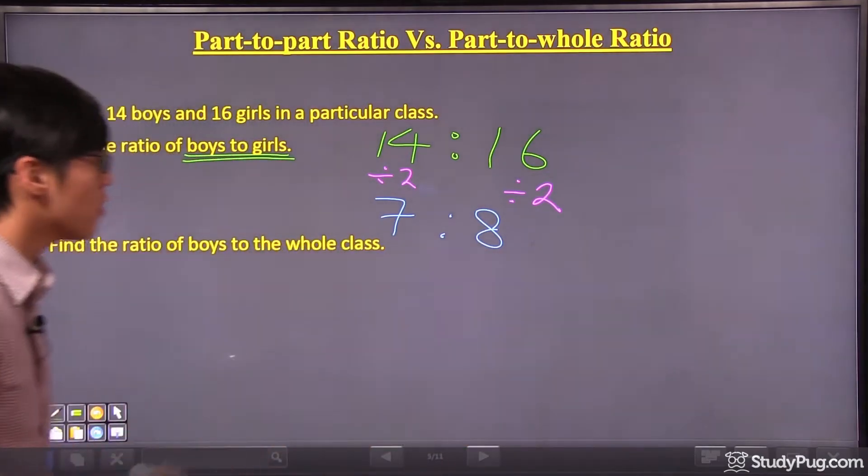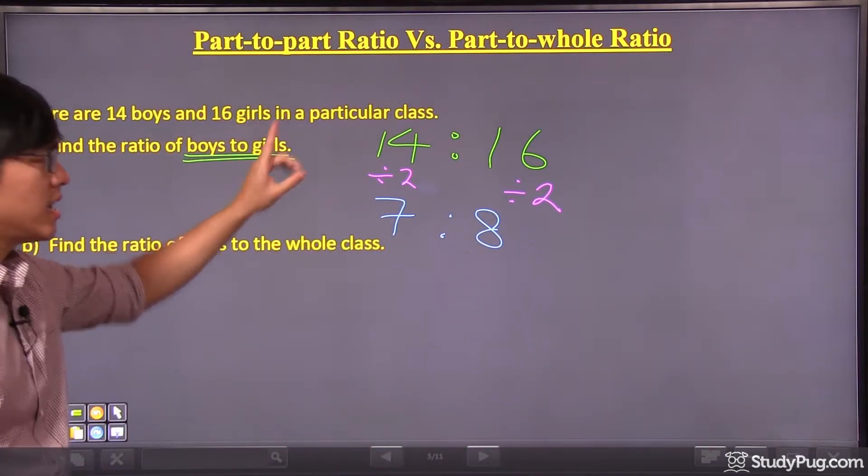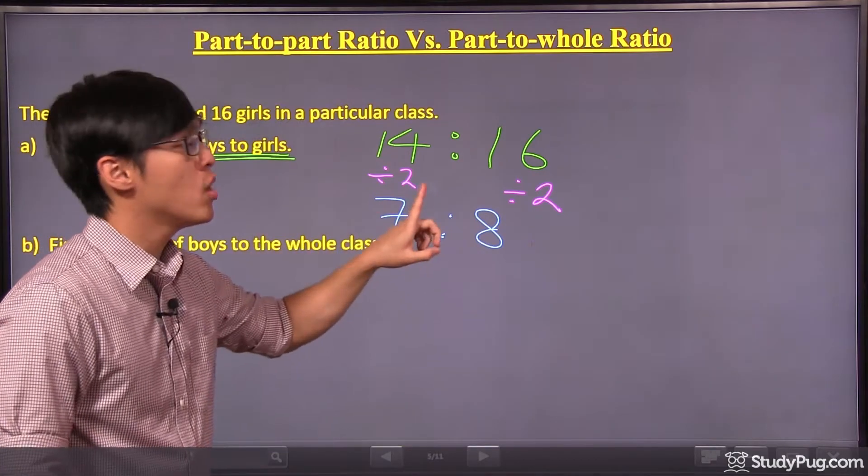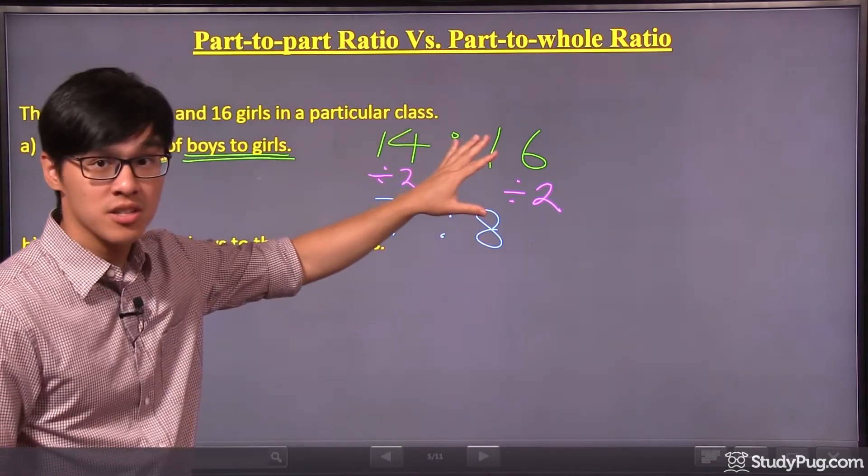Okay, so the overall answer, the ratio of boys to girls, it's 7 to 8 instead of 14 to 16.